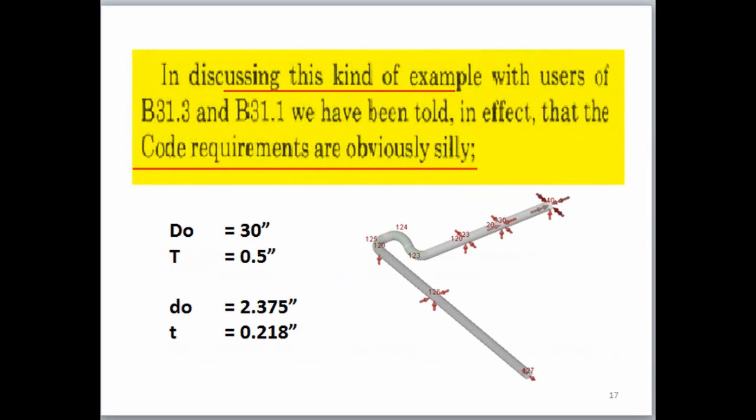But we remember from the last webinar that WRC 329 on page 22 said that for this D over D ratio, the very small D over D ratio, the code requirements are obviously silly. So let's go see quickly what this means.